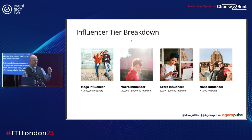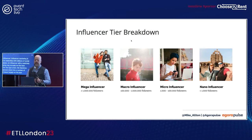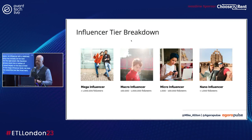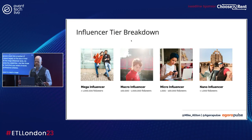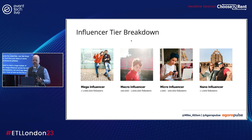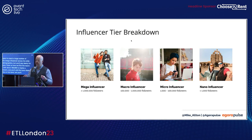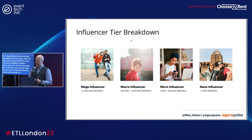Influencer marketing is not limited to celebrities with millions of social media followers. An influencer with a relatively small following may actually be the best influencer for the right event. We break influencers down into categories based largely on the size of their audience. At the mega influencer level, we have celebrities — movie stars and professional athletes. You can expect to reach a huge number of people across a wide swath of demographics, but you'll pay dearly for that exposure. Down a tier, the macro influencer has about a hundred thousand to a million followers, including influencers who've built their following on social media in a specific industry like travel or food.